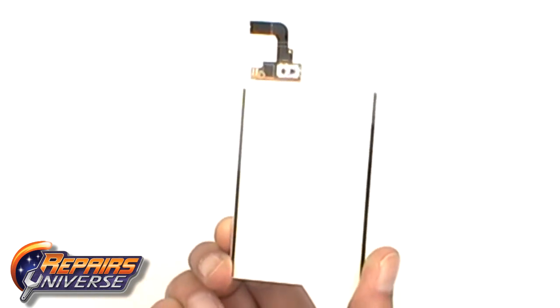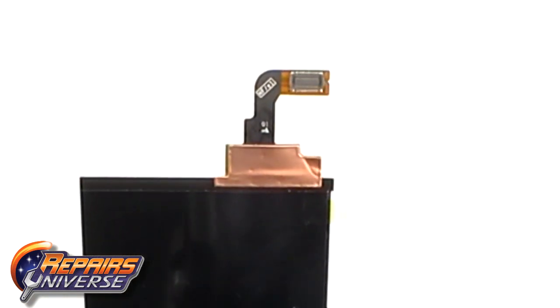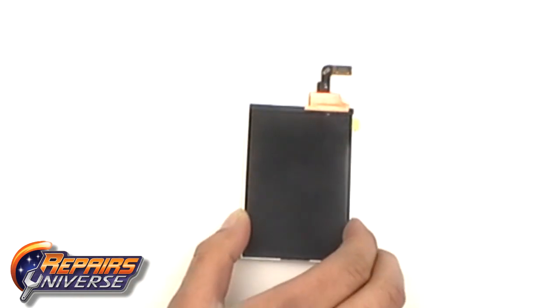If the LCD is damaged, you will likely have issues such as dead pixels, black spots, discoloration, or LCD bleeding. If your device is having any of these symptoms, then replacing this part is what you will need to fix your device.